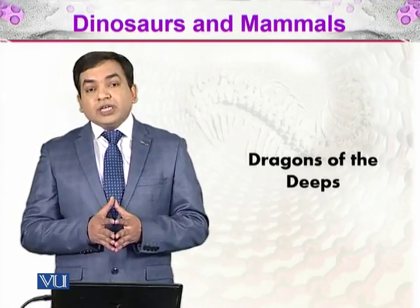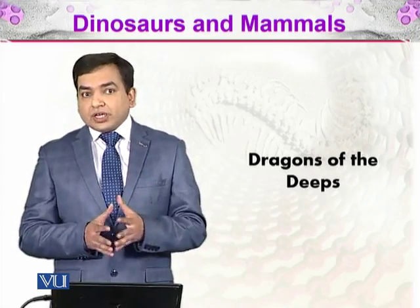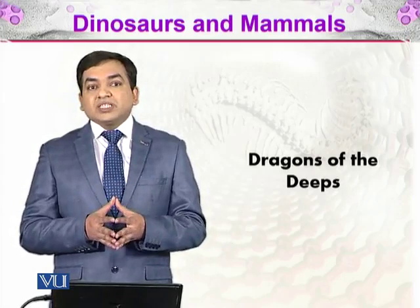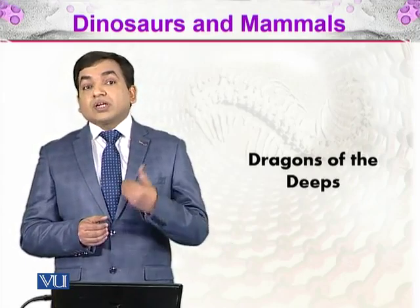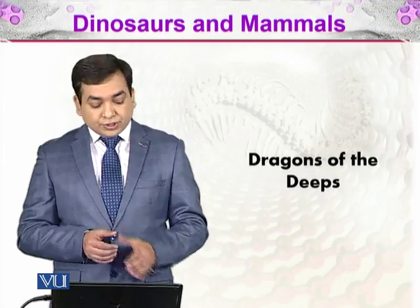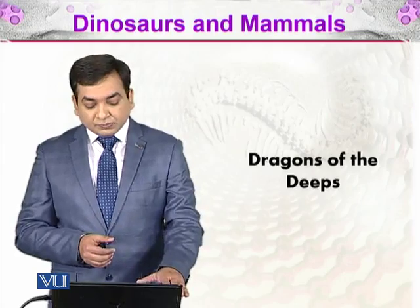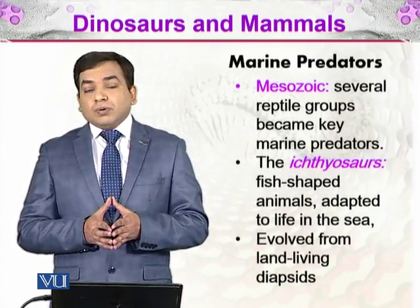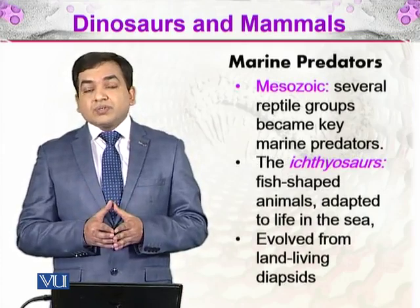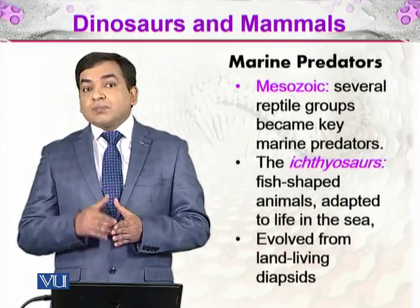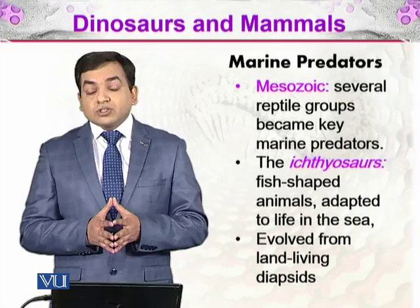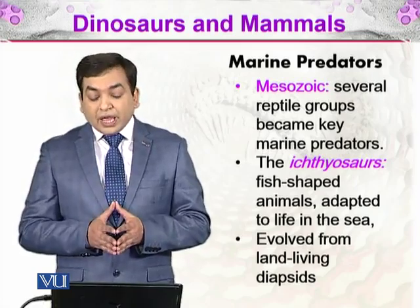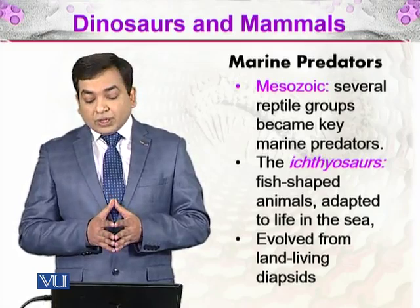Dragons of the deep means that the oceans are deep. So in this topic, we will be discussing about the dinosaurs which were living deep in the oceans. The marine reptiles — these diapsids which were present in the marine environment — were predators, carnivores, and they lived during the Mesozoic.